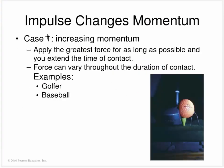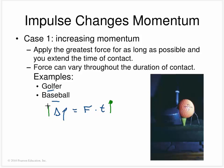That same idea explains why golfers and baseball players are told to follow through or swing through the ball. They're trying to give the ball the most momentum possible. Since change in momentum equals force times time, extending the time of contact gives the ball as much momentum as possible. That's why golfers swing through — they want to increase the time of contact.